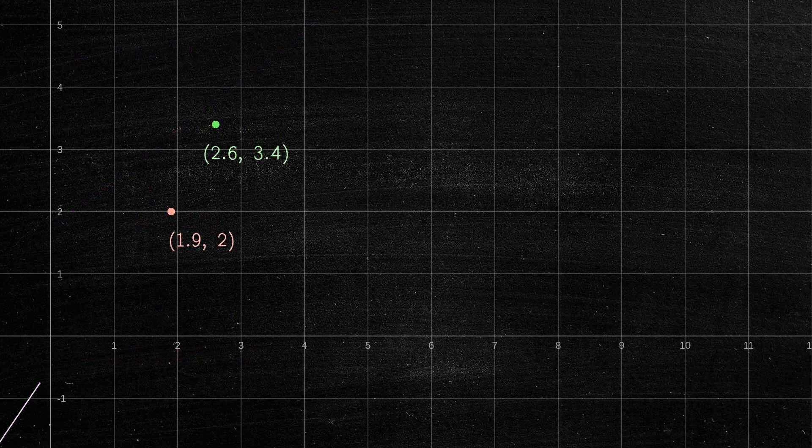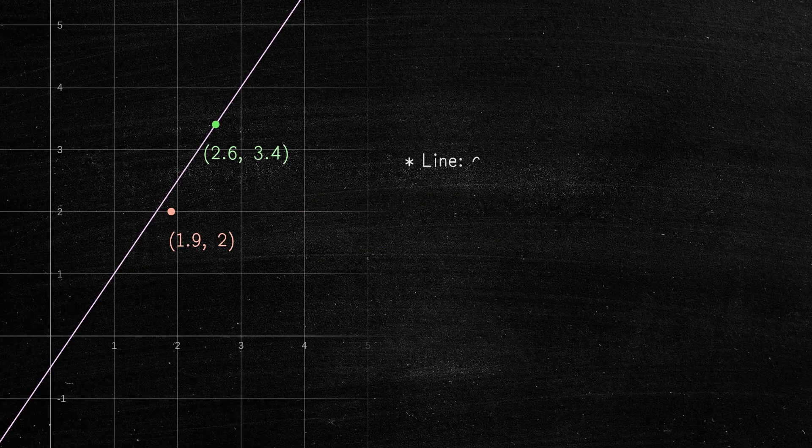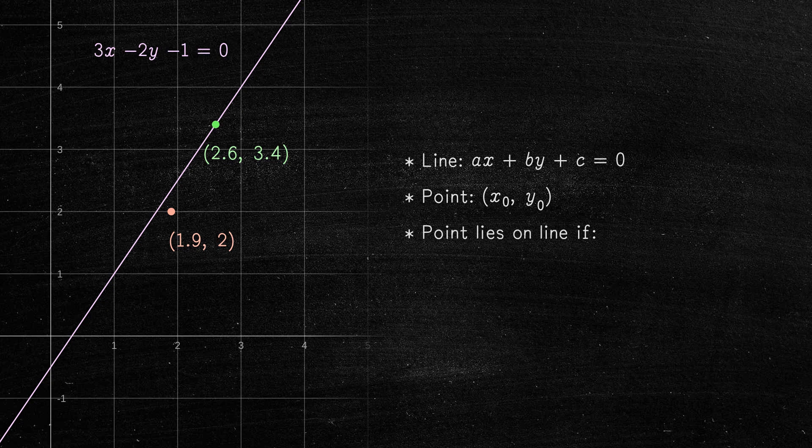The second case is when the line is given in general form. The point belongs to the line if the following equality holds.